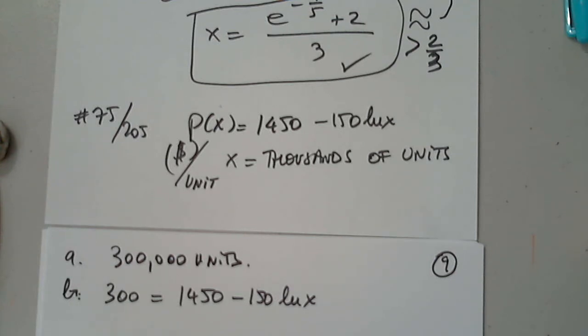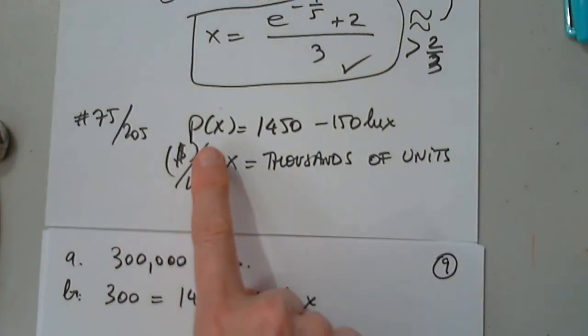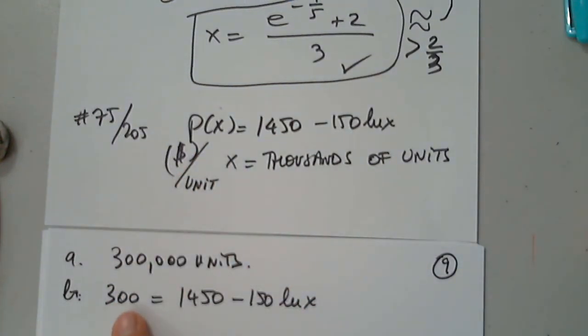So I have 300 equals 1450 minus 150 natural log x. And then we'll talk about the demand. What price corresponds to a demand of 30,000 units? Okay. Good. So let's, we are asked if the price per unit is 300, how many thousands of units are sold? Okay. How many units will consumers buy at a price of 300 per camera? This is the price per unit, and we want to determine x in thousands. Okay. How do we do that?